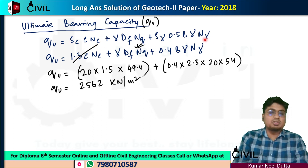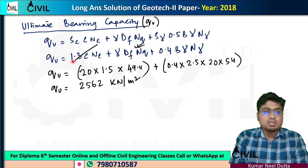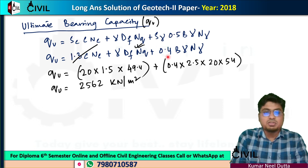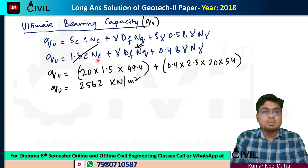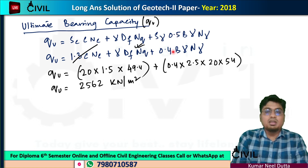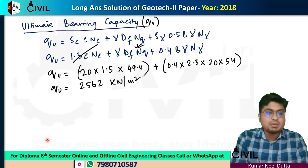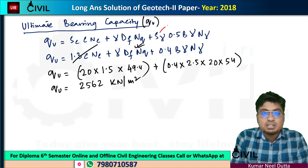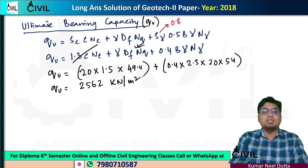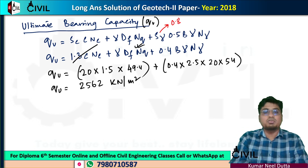For a square shape footing, the shape factor sc equals 1.3 and s-gamma equals 0.4. Actually, s-gamma is 0.8 in some references. For this case, s-gamma is 0.4 and sc equals 1.3. The first line refers to the shape factor. This is for the general shear failure state.